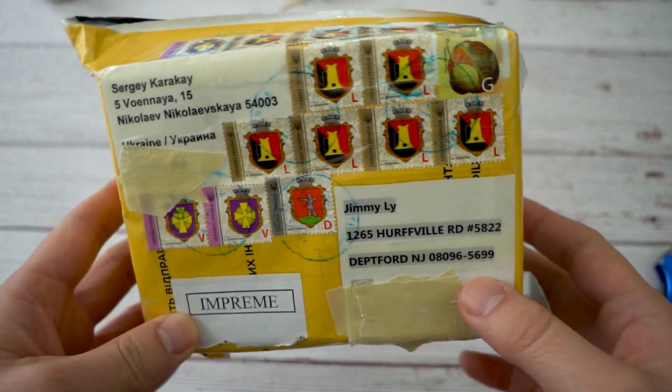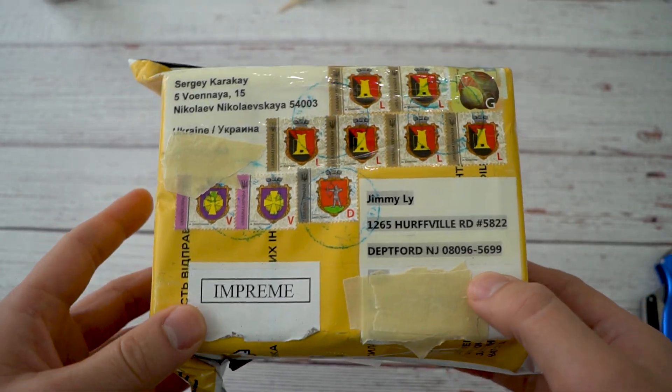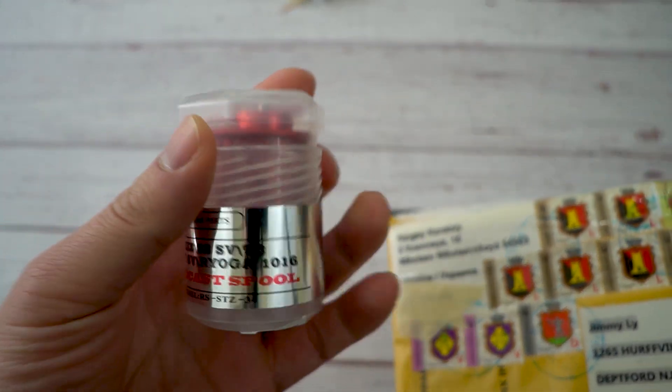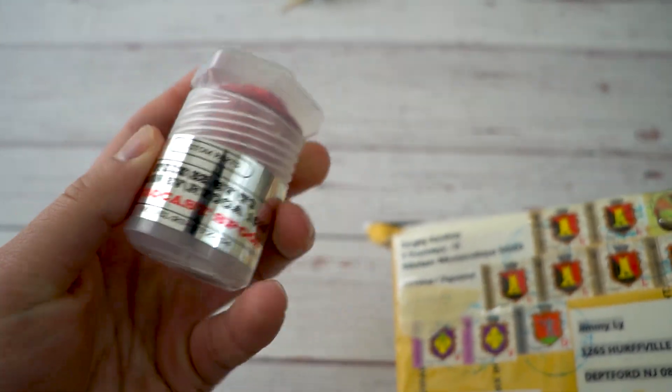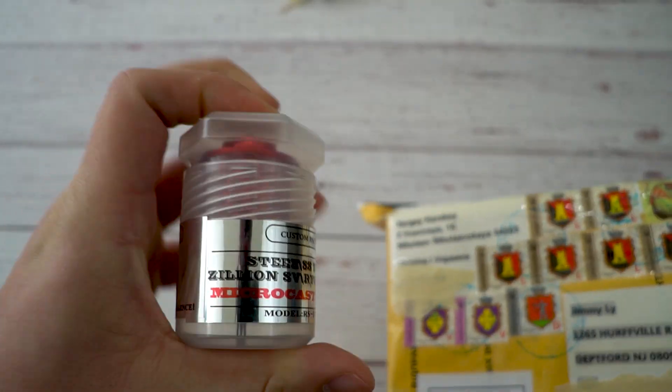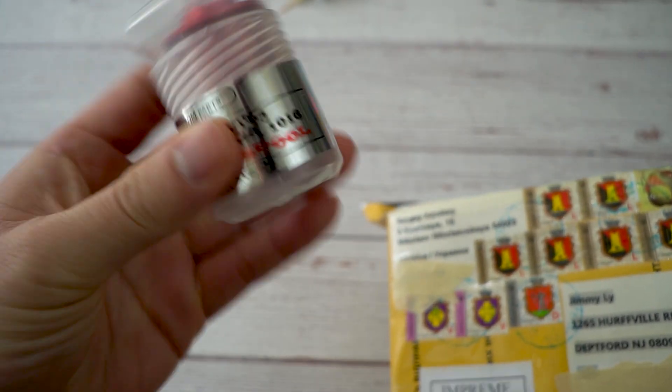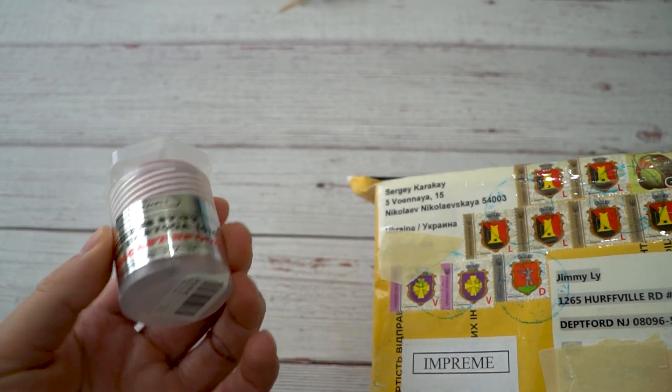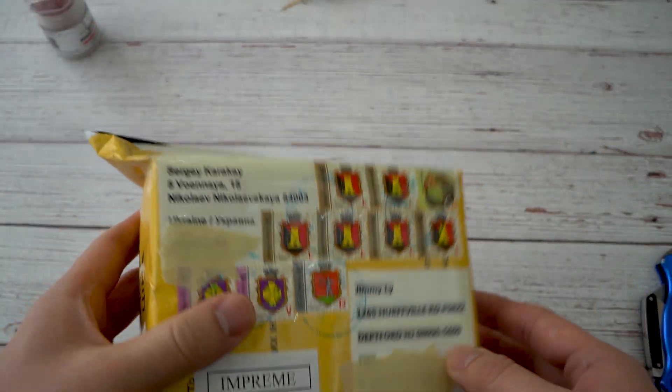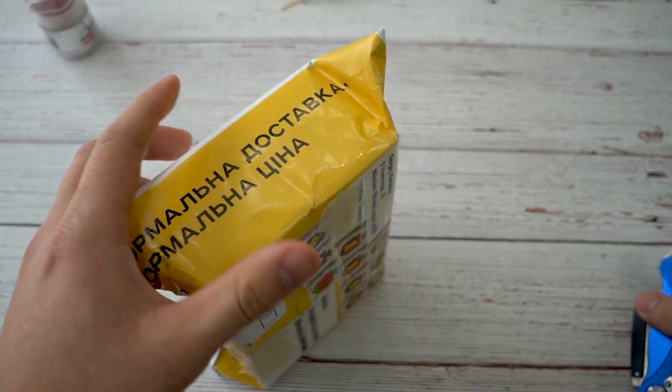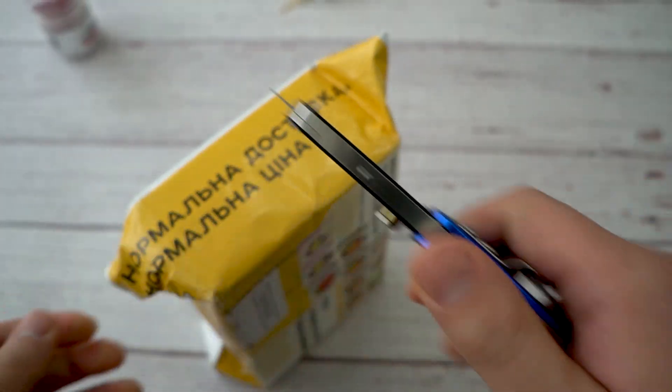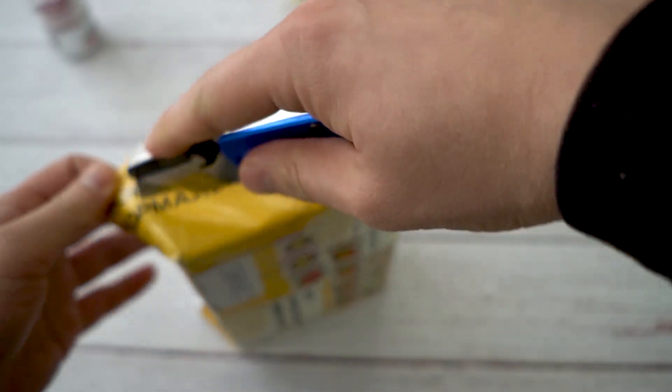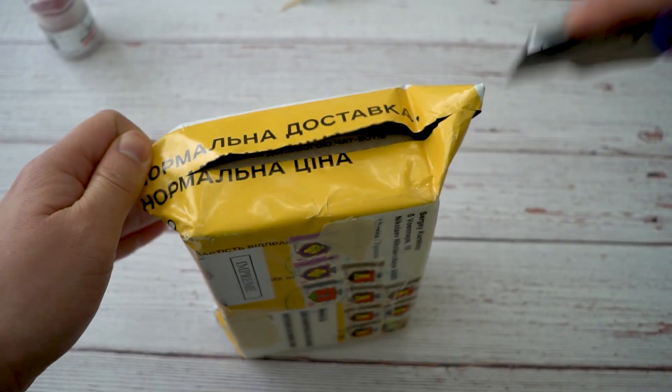He has sent me a spool container holder thingy. You guys see these right here? Some of them come in these plastic cases, but if you guys are going to go travel, these might not be the perfect things to bring with you because you never know, things could get smashed. So he sent me one and I'm going to show you guys that. And he also said he'll send me some other goodies.